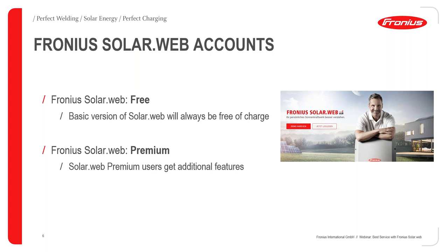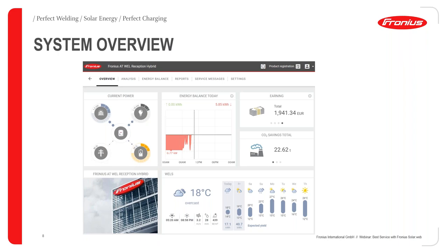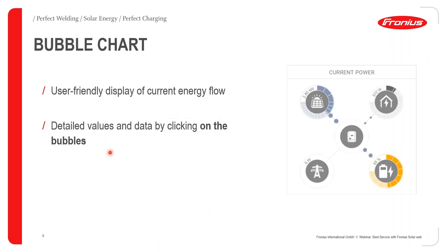Starting with a brief system overview, this is the landing page for Fronius SolarWeb. If you have an account you can log in, or you can open one. The basic system view gives a holistic overview showing details of power generated from the PV system, power consumed, state of charge of the battery, and whether you're feeding into or taking from the grid.